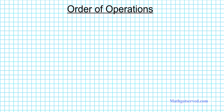Before we start doing some examples, let's go ahead and write down an acronym that will help guide our problem solving process. So this is PEMDAS. And an easy way to remember this is: please excuse my dear Aunt Sally.